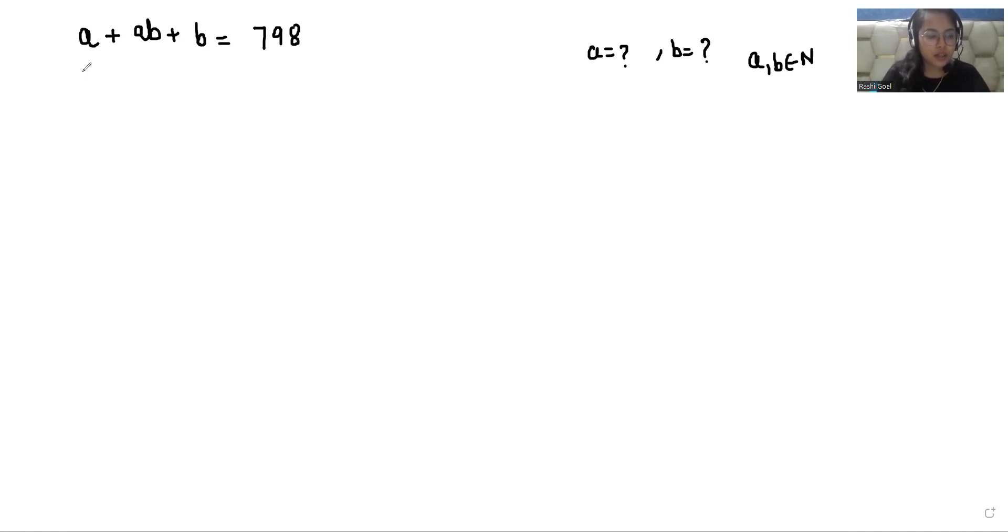In the first step, I'm going to add 1 to both sides. So A plus AB plus B plus 1 equals 798 plus 1. So A plus AB plus B plus 1 equals 799.